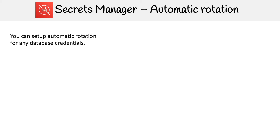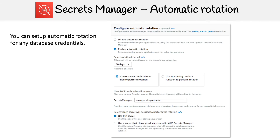The huge value with Secrets Manager is automatic rotation. You can set up automatic rotation for any database credentials — so any of the managed services and even other databases. There's no automatic rotation for the key-value secret type, so it's just the database stuff. Once you go through the wizard for any of those steps, you'll come to the automatic rotation section. You enable it and choose your rotation interval, which can be up to 365 days — up to one year.